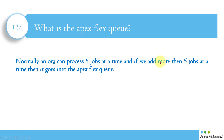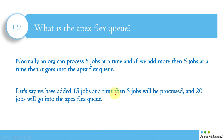What is the Apex Flex Queue? Normally an org can process five jobs at a time. If we submit more than five jobs simultaneously, the additional jobs go into the Apex Flex Queue. Salesforce cannot reject the incoming batches, so it stores them in the flex queue. For example, if five jobs are running and a sixth comes in, it gets stored in the Apex Flex Queue.